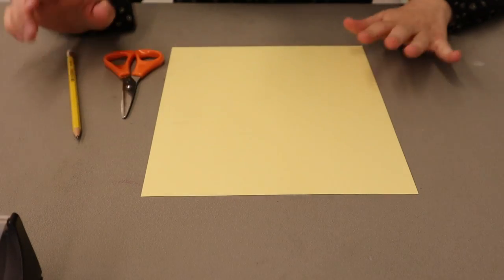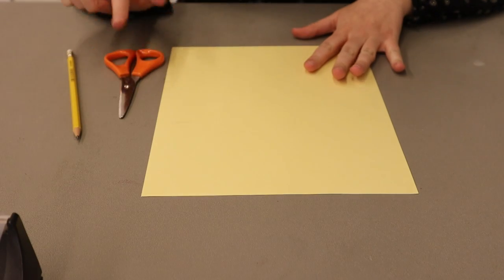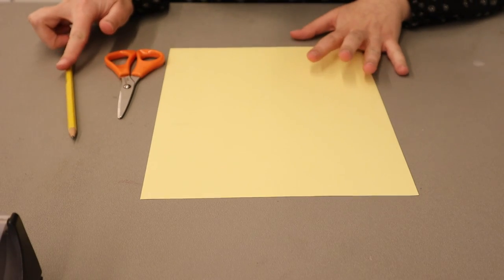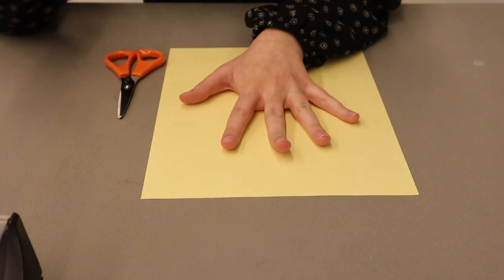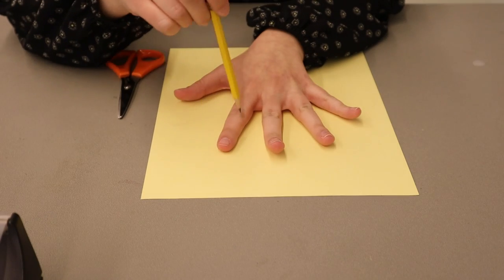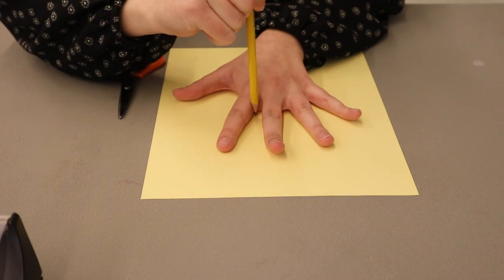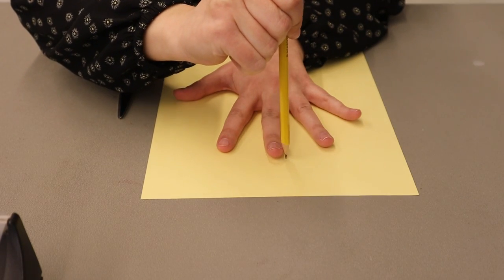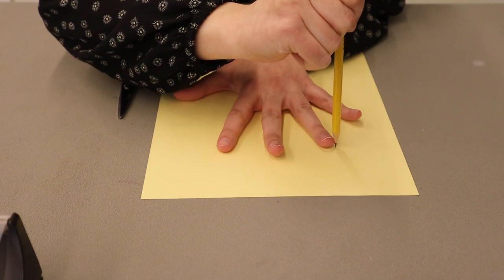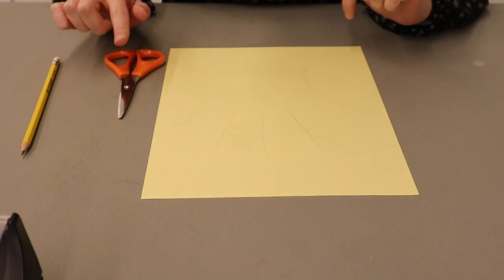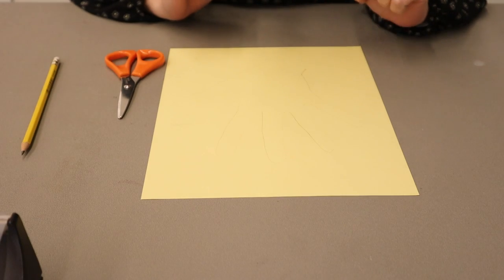The first thing we are going to do is grab our paper, our scissors, and our pencil. Using our paper and pencil, we are going to trace our hand. Remember to spread out your fingers wide enough for the pencil to go around. Now that your hand is traced, you're going to use your scissors to cut out your hand.